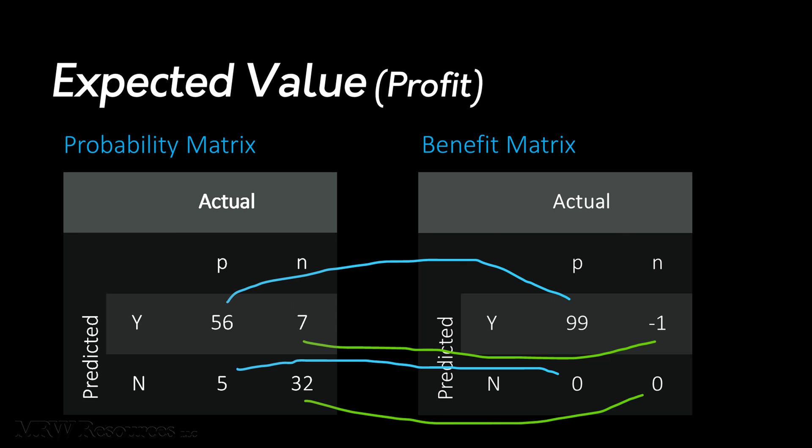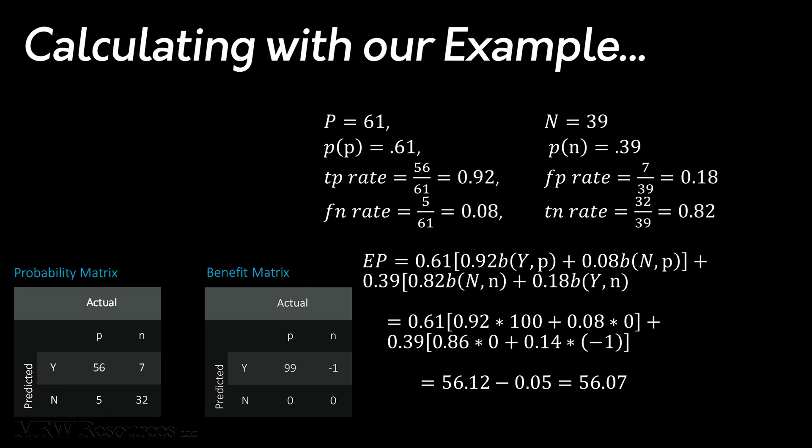Now we can take our probability matrix, our benefit matrix, apply a little matrix algebra, and we are able to calculate our expected value for this model. This expected value means that if we apply this model to a population of prospective customers and mail offers to those it classifies as positive, we can expect to make an average of about $56.07 profit per consumer. With 100 customers in my data set, I would anticipate a net benefit of $5,607. Now this example presents a pretty good scenario. Many scenarios will have a much smaller proportion of the positive class. As we'll see, we can still use what we have here and adjust our expected value based on our expected class distribution.